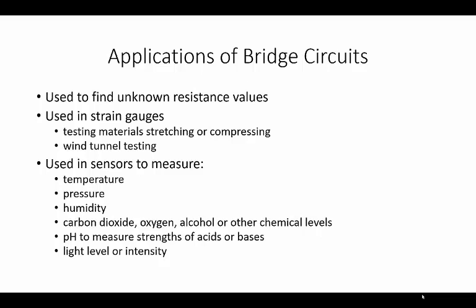So temperature sensors, pressure sensors like in a scale or balance, humidity sensor, carbon dioxide, oxygen levels, alcohol level, pH level to measure the strengths of acids or bases, light level or intensity, all of these kinds of sensors can make use of bridge circuits to detect changes in their levels. So they're used all the time.